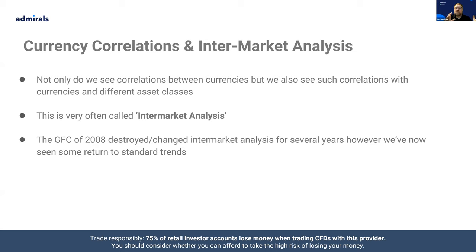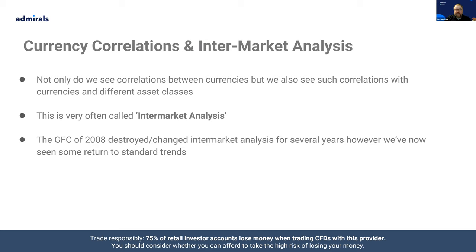So that was currency correlations. Not only do we see correlations between currencies, but we also see such correlations between currencies and different asset classes. This is very often called intermarket analysis — the relationship between not only just FX, but actually lots of different asset classes. The GFC of 2008 destroyed or changed many of the core elements of intermarket analysis for several years. However, we've now seen some return to standard trends, and we've also seen other trends created. And the COVID crash and pandemic response in the last 18 months has also created particular correlations between certain instruments.